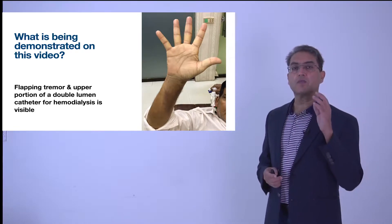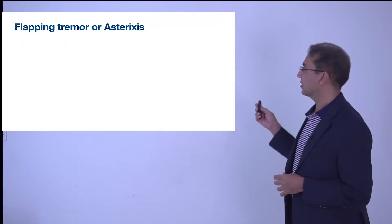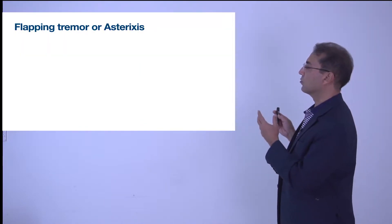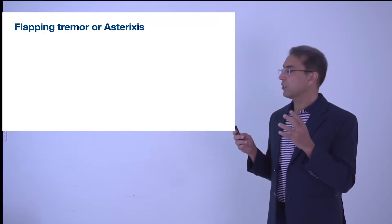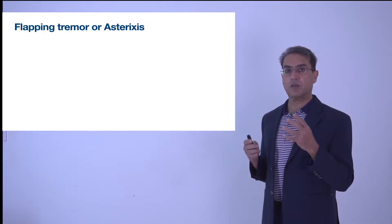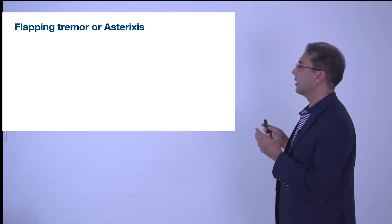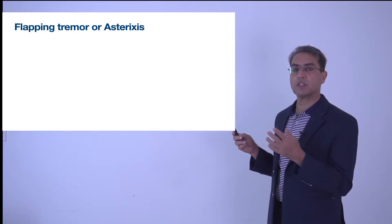Now what is this flapping tremor or asterixis as we call it? We use both terms for this condition. It used to be called liver clap, but it can be seen in many other conditions, so it's not only liver disease.